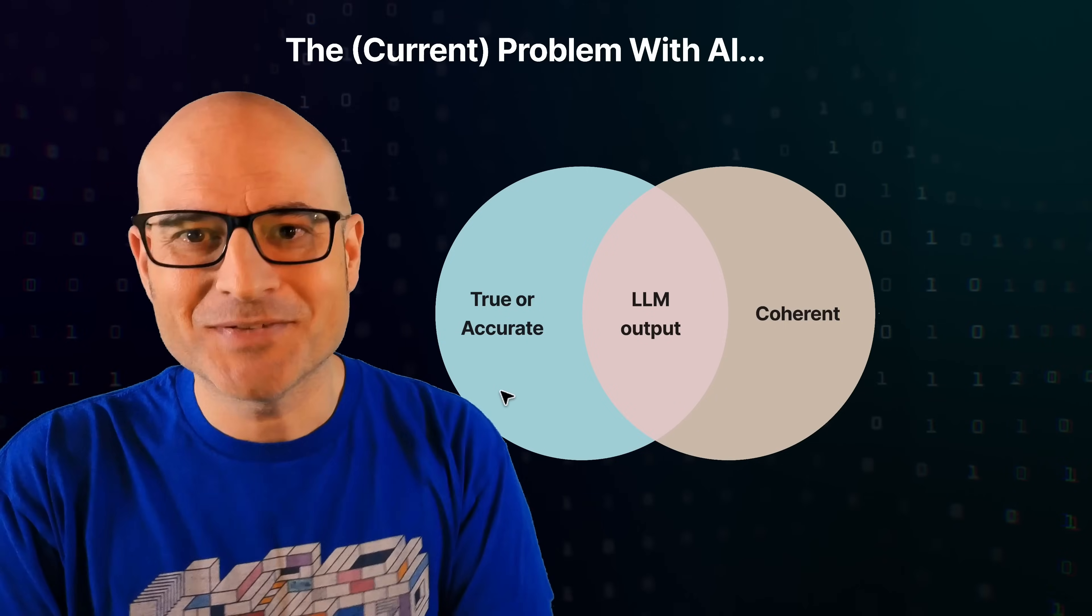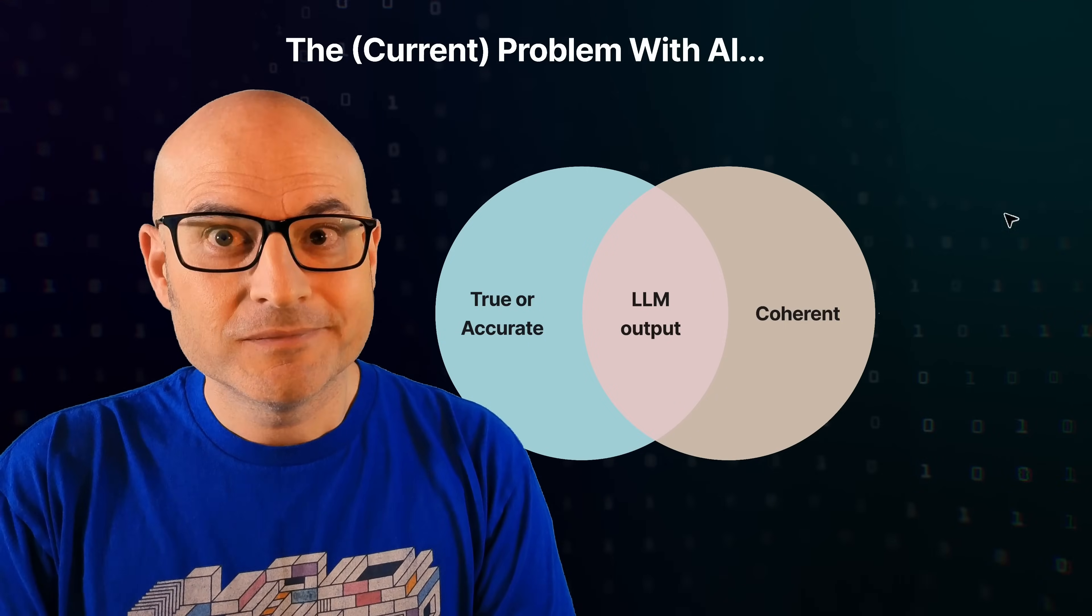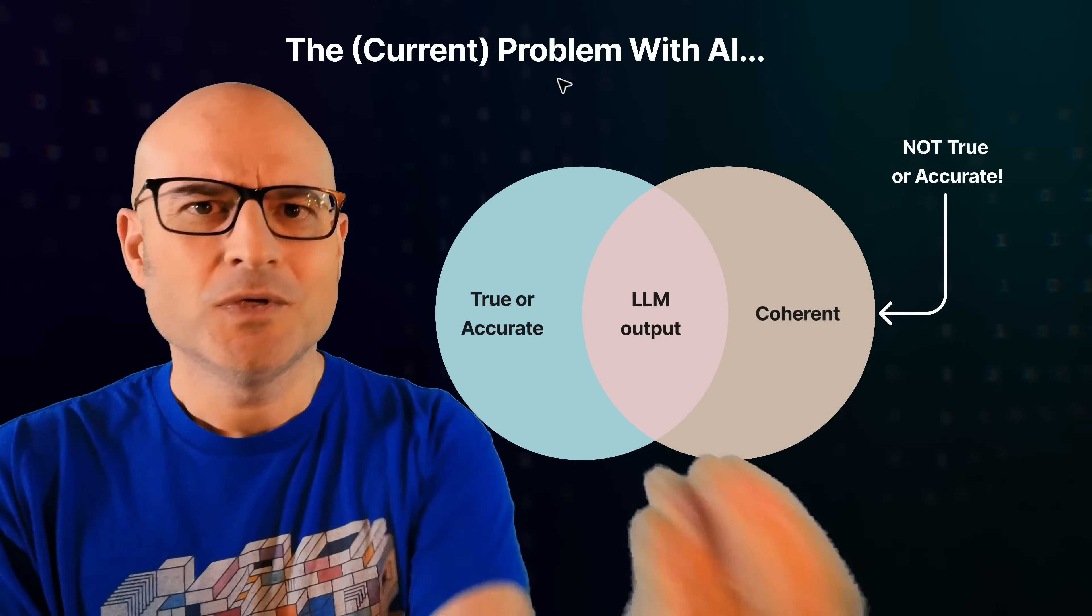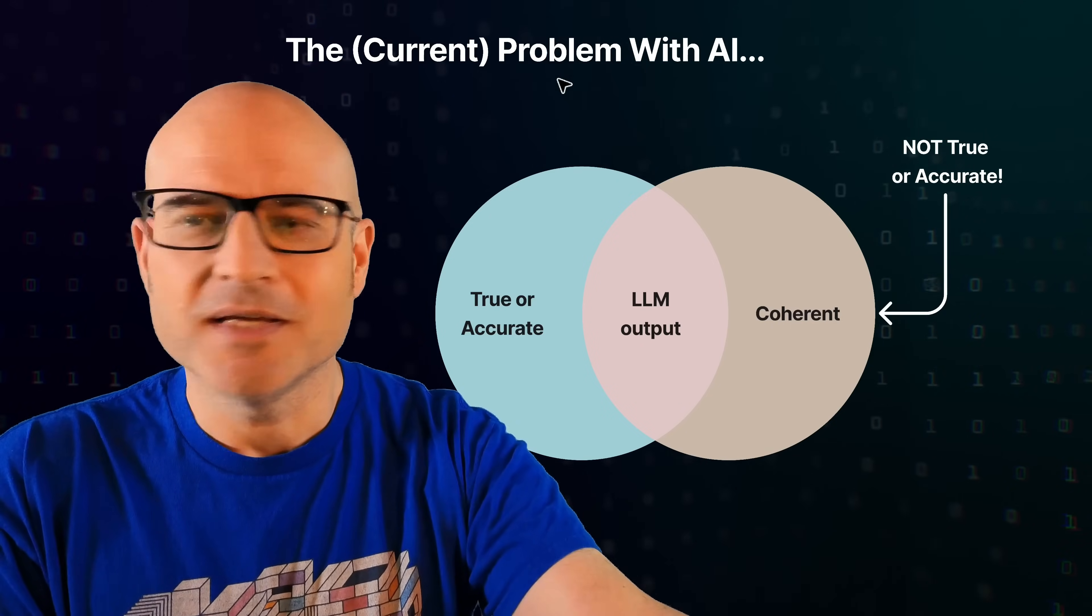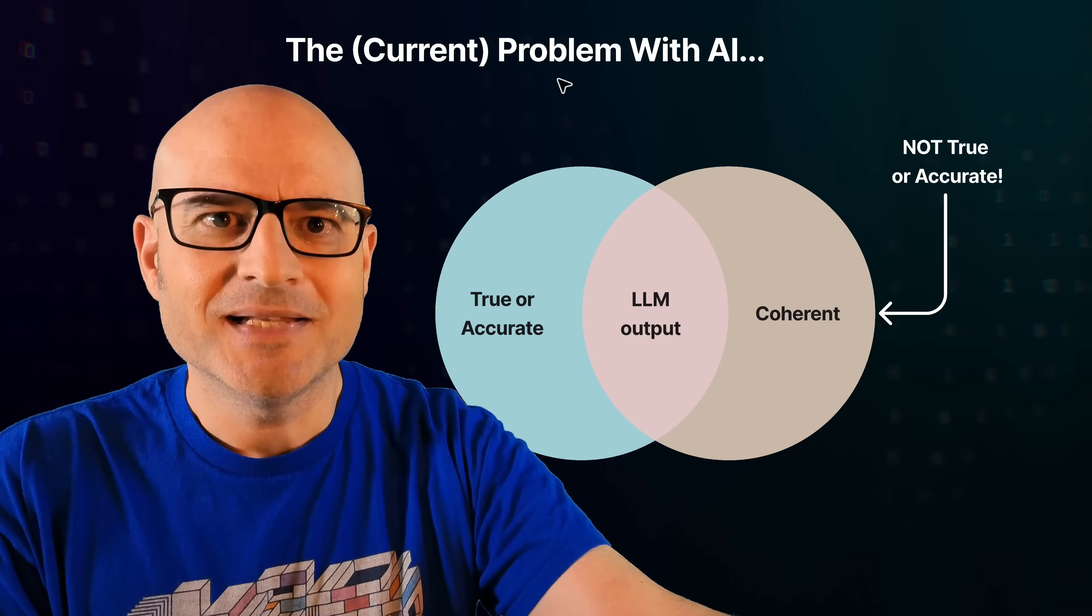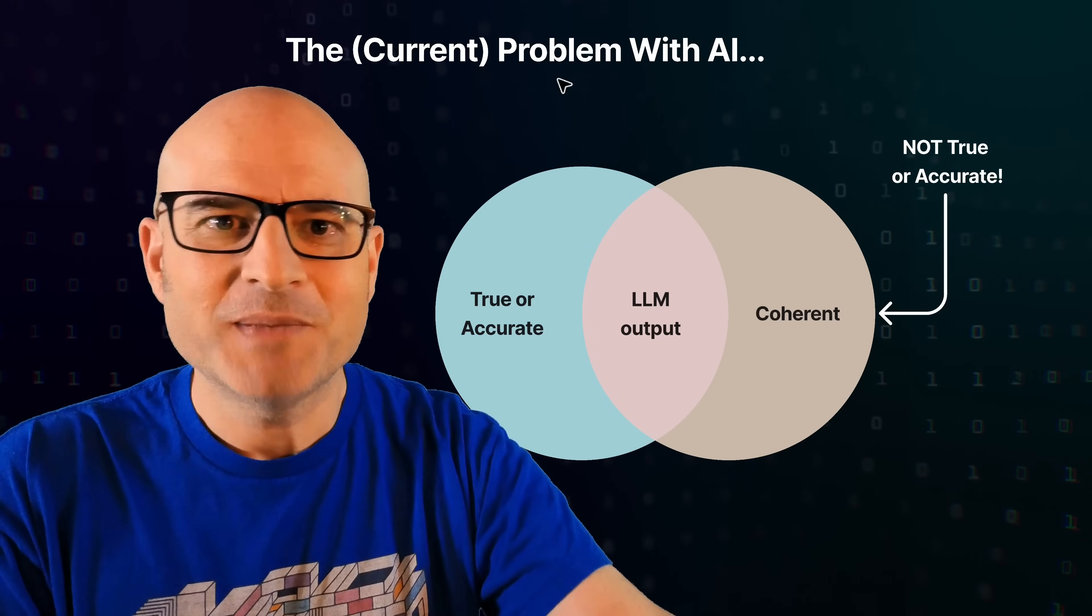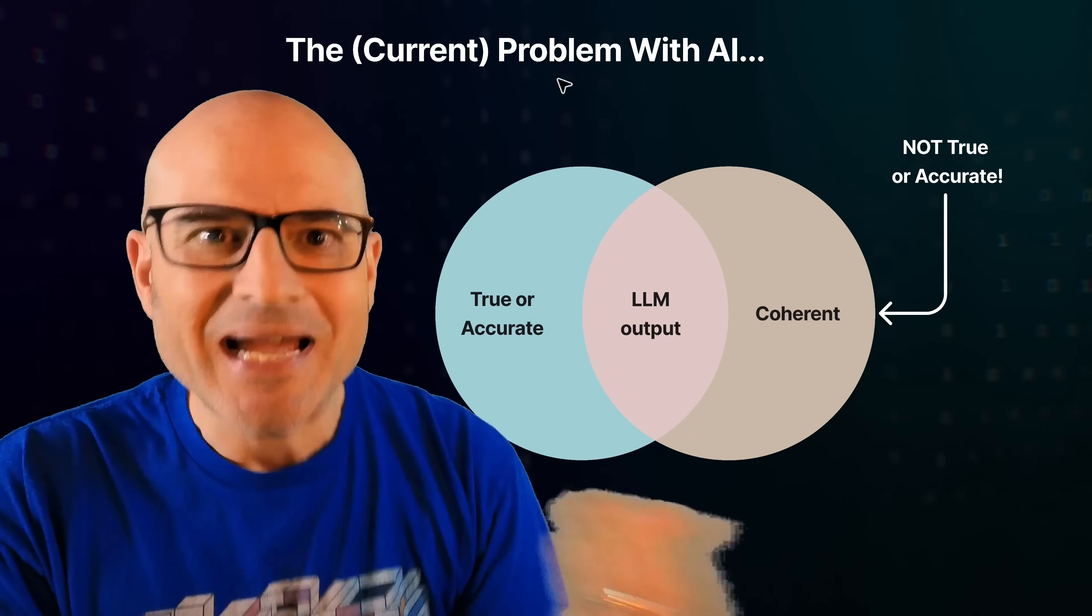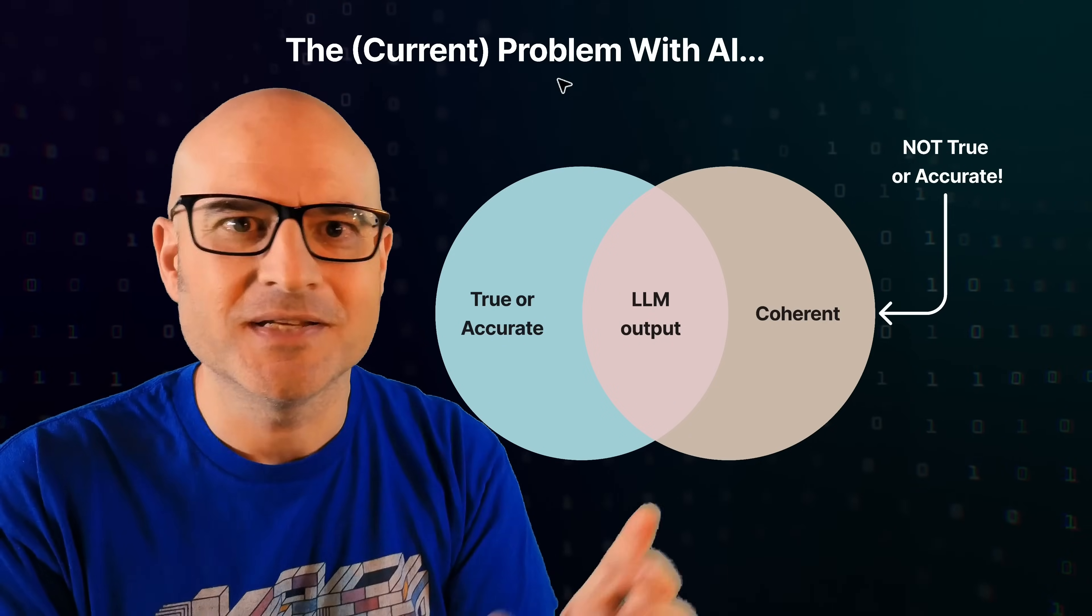If we think about this as the Venn diagram, there are some things which are coherent, which are not true or accurate. When I say true, what I mean is, let's say you've got some instructions on the internet and you ask the LLM, okay, tell me how this machine works. What you're expecting, because this is what Google supposedly does, is it returns the actual accurate instructions to you because you can read them. They're there on the internet. That's what I mean by true.